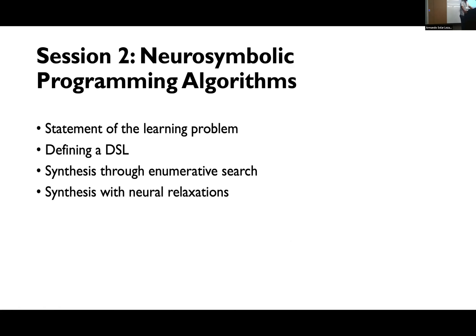So what are we talking about today? We'll set up the problem of learning neurosymbolic programs a little bit more formally. Then we'll talk about ourselves — that was this important new kind of input to the learning problem, as opposed to classical deep learning. We'll talk about synthesis using enumeration search, which is the most basic kind of neurosymbolic learning algorithm, and then synthesis with neural relaxations. In the hands-on part, you'll experiment with the enumerated search.